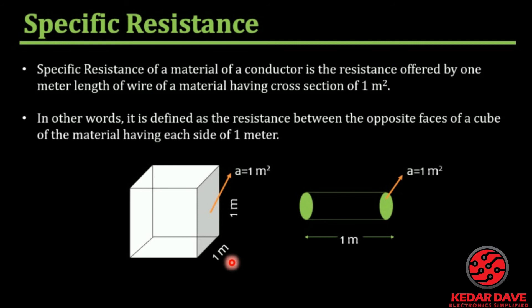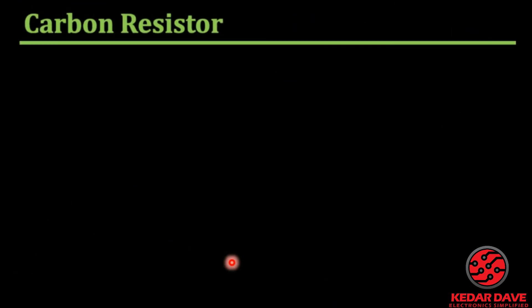This way the specific resistance can be defined. Now we will look at the carbon resistor. Carbon resistors are the simplest type of resistors used in electrical circuits. They have different types of color bands and we will learn what all these bands represent today.